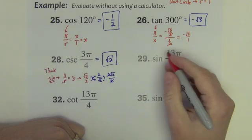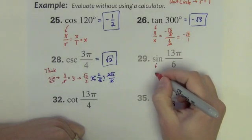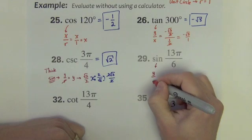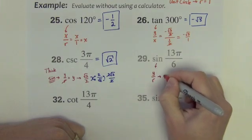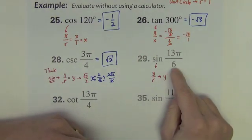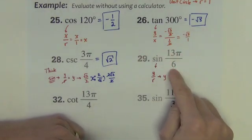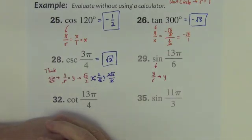Sine of 13 pi over 6. It's the sine. Sine is y divided by r, which is just y. I need the y value of the point at 13 pi over 6. So find 13 pi over 6. And when you do that, you look at it, you start counting out the 6.